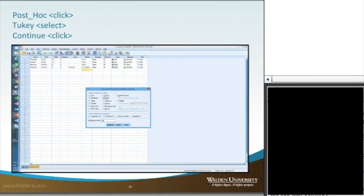We're going to select post-hoc from the post-hoc radio button, and then we'll get a new window that opens up, and we're going to select the Tukey, which is in the middle column there, and then we'll click Continue.